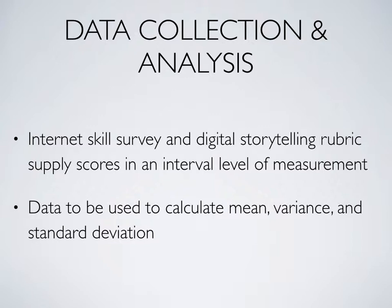The internet skill survey and digital storytelling rubric will generate scores in an interval level of measurement so the mean can be calculated. This is also logical, as the shape of the distribution is anticipated to be evenly spread. After that, variance will be calculated to get a more accurate measure of the spread. Standard deviation will be calculated to measure the average deviation from the mean in intervals. The combination of mean and standard deviation will help provide a stable, precise measure of central tendency. The data will be coded and transferred to a computer file.